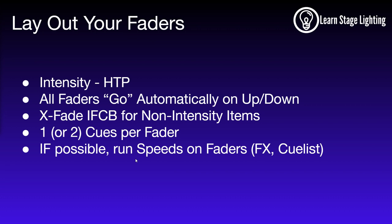Having speed control is crucial. When I first started punting, I had to program multiple versions of the same effect at different speeds and access them on different pages. Instead, make one effect and control the speed from a fader - or sometimes from an encoder wheel depending on your console. That way you don't need separate slow, medium, and fast versions of everything.